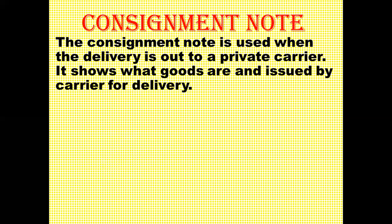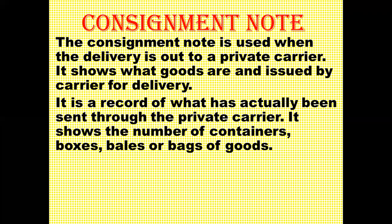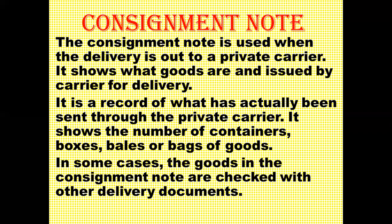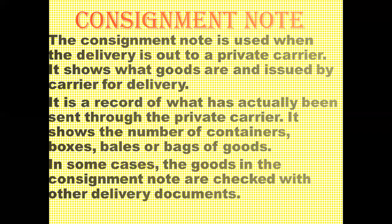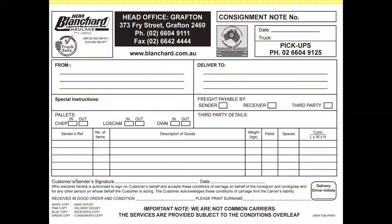The next document is the consignment note. A consignment note is used when delivery is handed to a private carrier — it shows what goods are issued by the carrier for delivery. The supplier gives the products to a carrier such as a truck company or courier company, and the goods are transported to the retailer. It is a record of what has been sent, showing the number of containers, boxes, bales, or bags, and can be checked against other delivery documents.